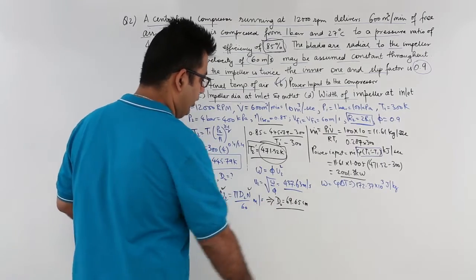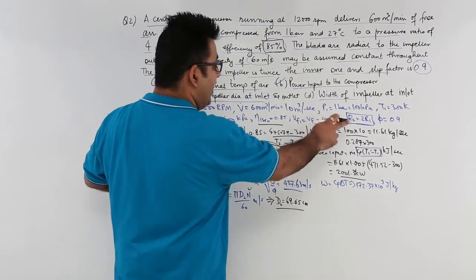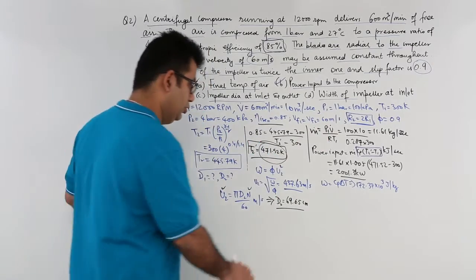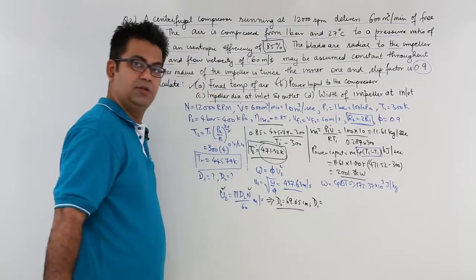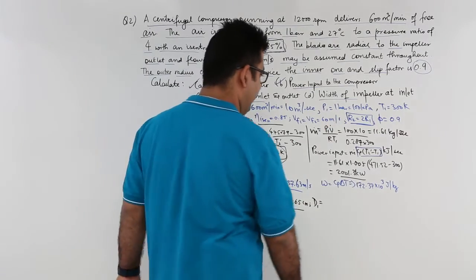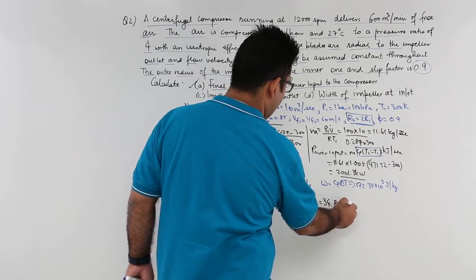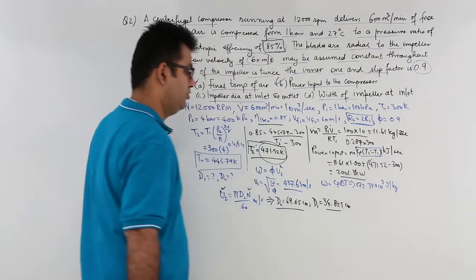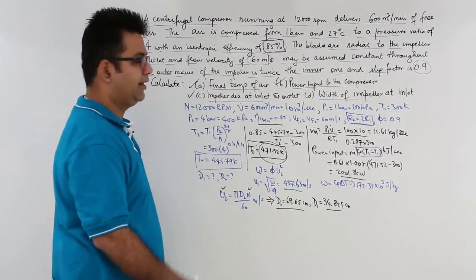So just convert it into centimeters. Now from d1 you can easily find out d2 because d1 is half of d2. So d1 is half of this. So you will get approximately 34.825 again centimeters. So you are done with the third part also. Impeller diameter at inlet and outlet.